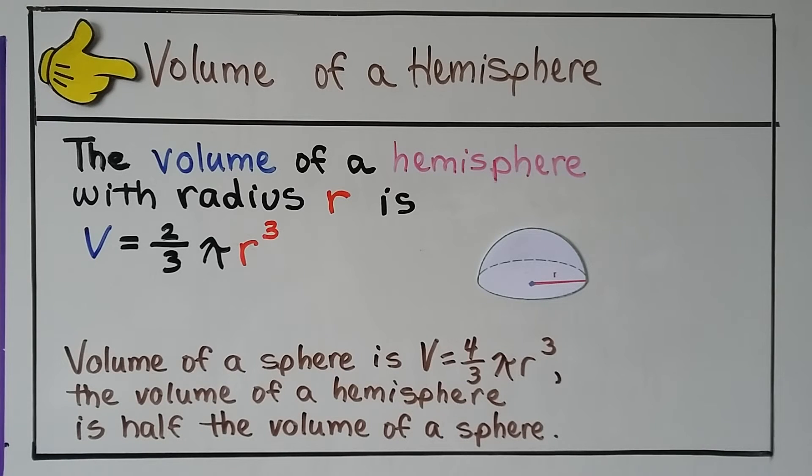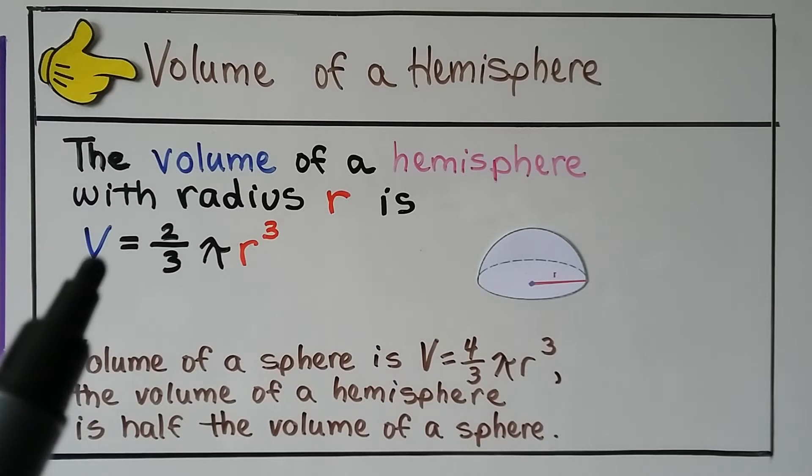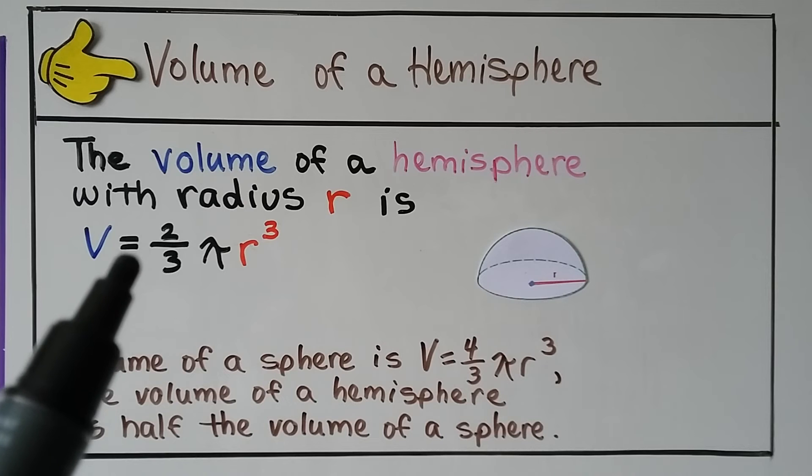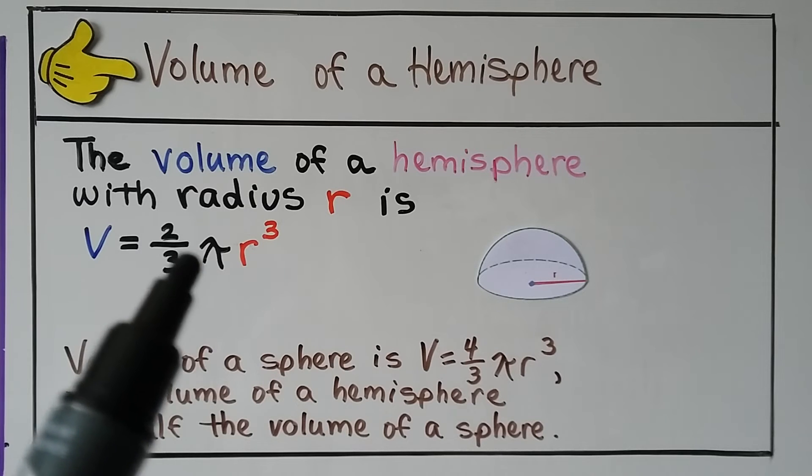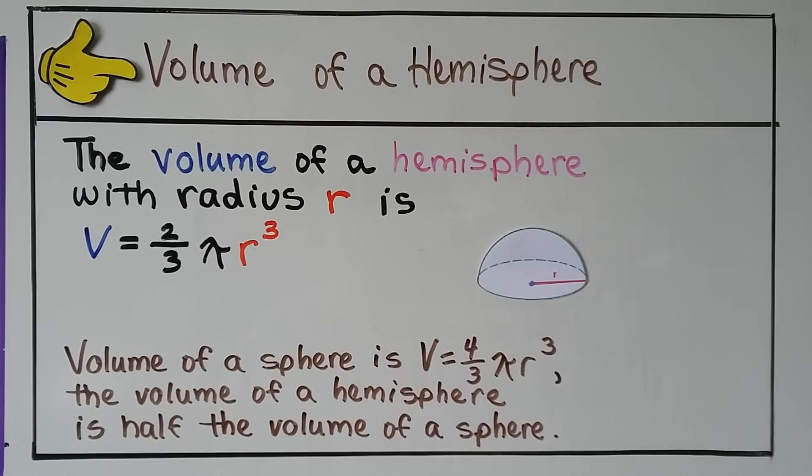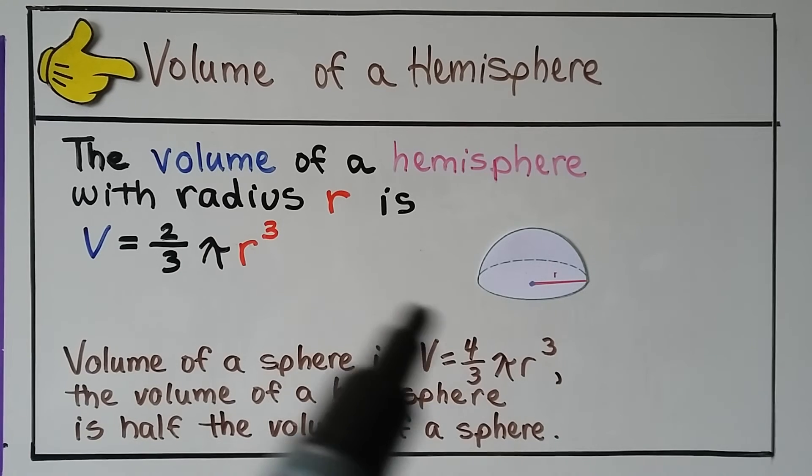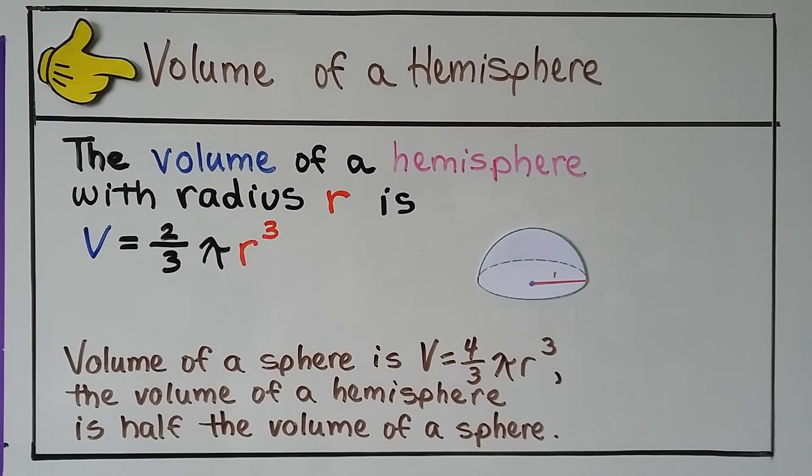Two hemispheres make a whole sphere. The volume of a hemisphere with radius r is v equals 2 thirds pi r cubed. The volume of a sphere formula is v equals 4 thirds pi r cubed. And because a hemisphere is half of a sphere, we have 2 thirds here.